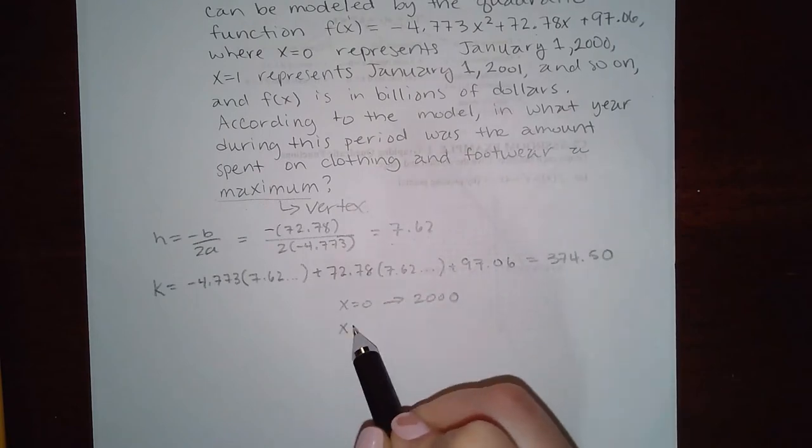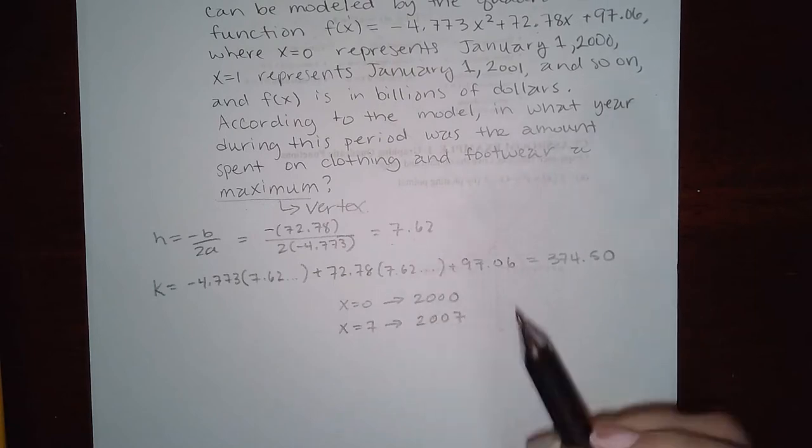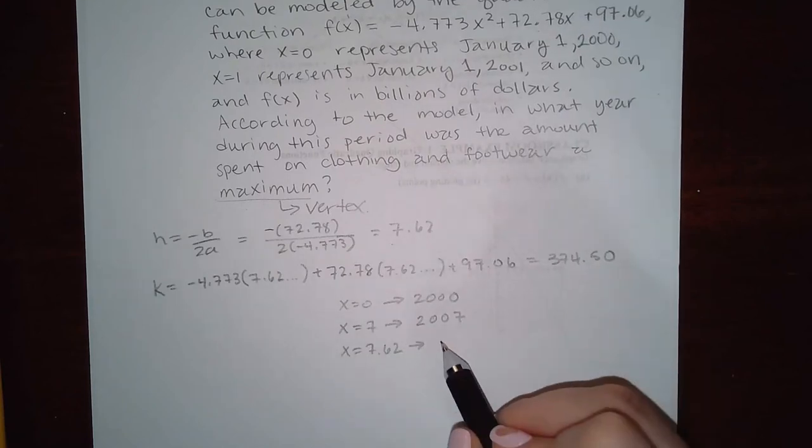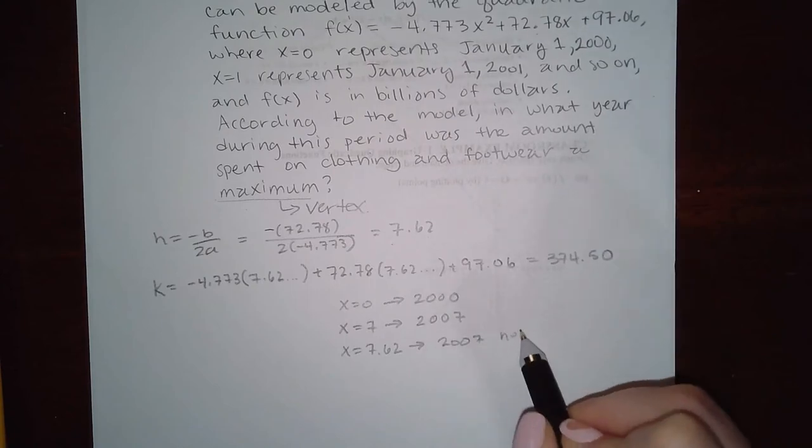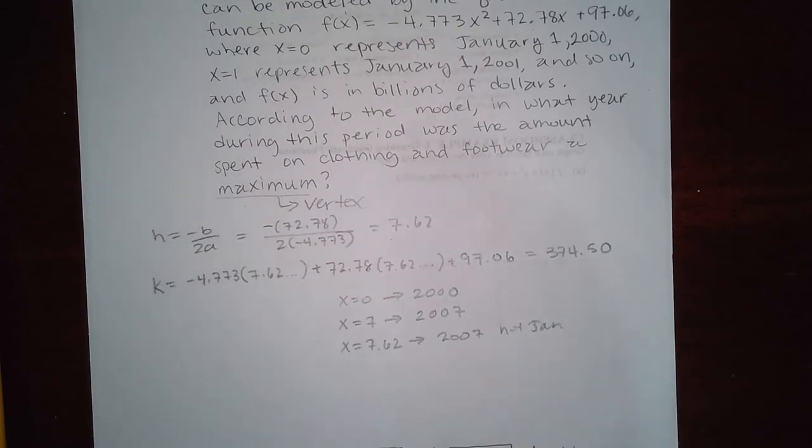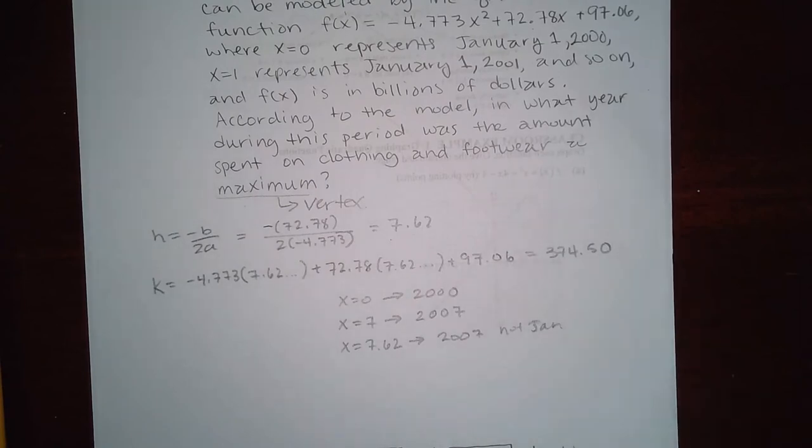So x equal to 7 would be January 1st, 2007. So if I have x equal to 7.62, that's still going to be 2007, just not January. It's going to be like, I don't know, 0.62 times 12, it will be sometime in the seventh, but sometime in July. Okay, but the year is still 2007. And then how many millions of dollars? It would be 374.5 billion dollars was spent.